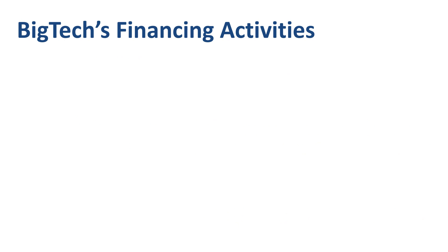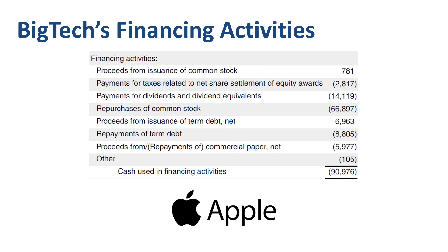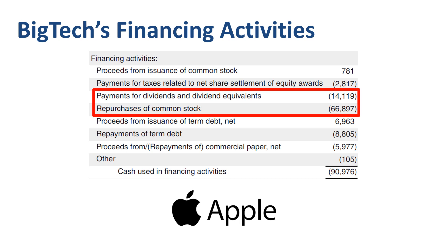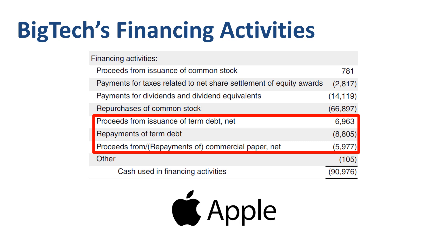A second big tech company that is interesting to review is Apple. Total cash used in financing activities is an outflow of $91 billion. The vast majority of this is cash returned to shareholders — over $14 billion directly through dividends, and nearly $67 billion indirectly through repurchases of common stock, which significantly reduce the number of outstanding shares in the market, making Apple shares far more scarce. Apple also has various line items related to either proceeds from issuance of debt or repayments of debt, which for this specific year were a net cash outflow.